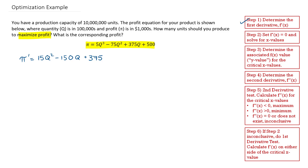Next, I'm going to set this derivative equal to 0 and solve for the corresponding q values. Setting this equal to 0, there are a variety of approaches I could take. Recognizing that this is a quadratic, I could use the quadratic formula or I can try factorization. I'm going to try factoring this out — I can first factor out 15, so I'm left with 15 times q squared minus 10q plus 25.